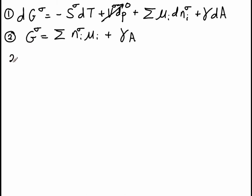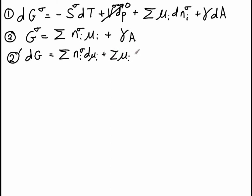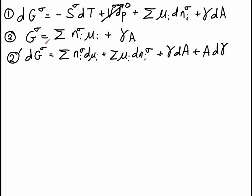Let's take equation two and label it as equation two prime — we're just going to take the differential of equation two. We have to use the product rule, giving terms N_i^σ dμ_i plus μ_i dN_i^σ. We also apply the product rule to the surface tension term, giving γ dA plus A dγ. Since equations one and equation two prime are both expressions for the change in the Gibbs energy of the Gibbs dividing surface, they must be equal.